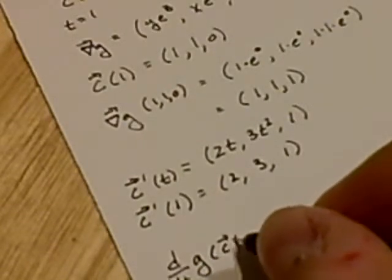And so the rate of change of g of c, the change in the function as you traverse the path, is the gradient of g dotted with the tangent vector.